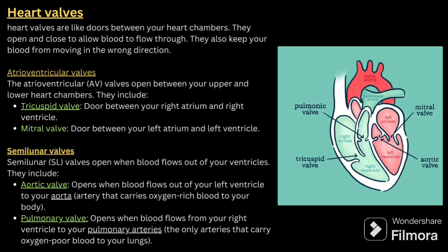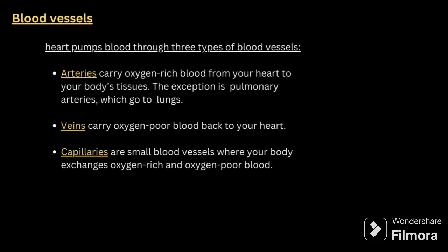Heart valves are like doors between the heart chambers — they open and close to allow blood flow. There are atrioventricular valves and semilunar valves. Atrioventricular valves are the tricuspid valve and the mitral valve, opening between the upper and lower chambers. The tricuspid valve is between the right atrium and right ventricle; the mitral valve is between the left atrium and left ventricle. Semilunar valves open when blood flows out of the ventricles — these are the aortic valve (left ventricle to aorta) and the pulmonary valve.